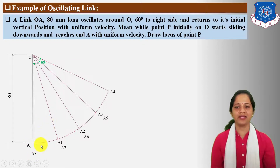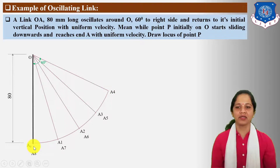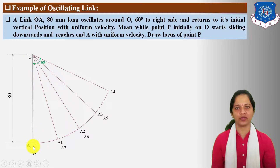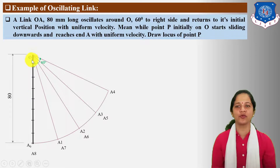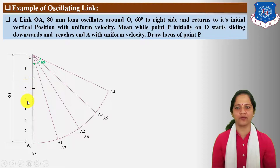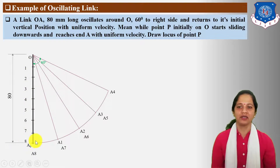When this link returns to its original position, at the same time point P slides downwards from O to A. So divide the initial position of link OA into equal 8 parts and mark here positions 0, 1, 2, 3, 4, 5, 6, 7, and 8.